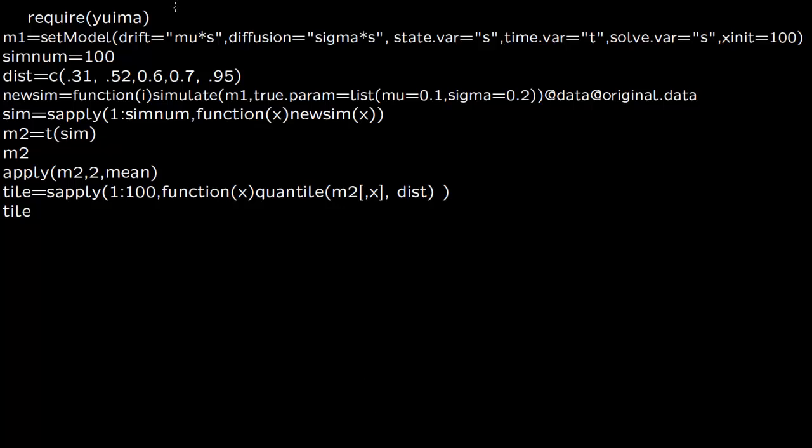We are now trying to build a probability distribution function associated with the geometric Brownian motion model. Our model was the stock price dS equals µS dt plus σS dW, so this is our drift and this is our diffusion.